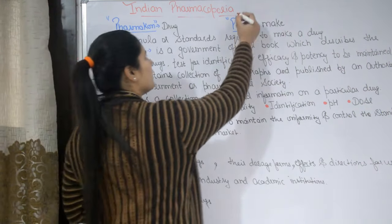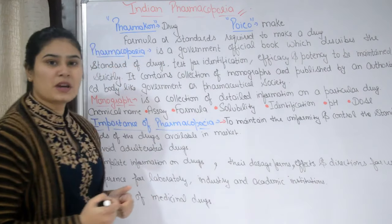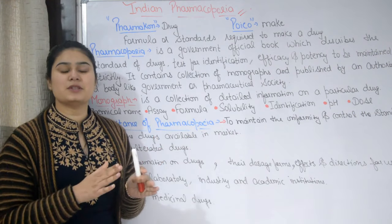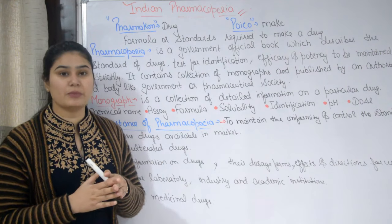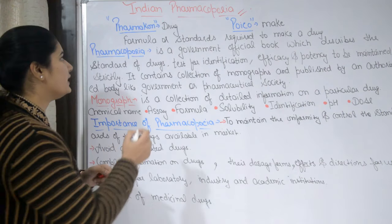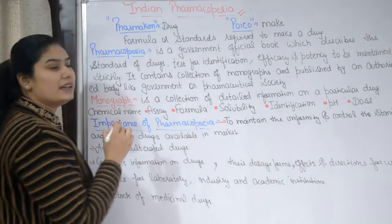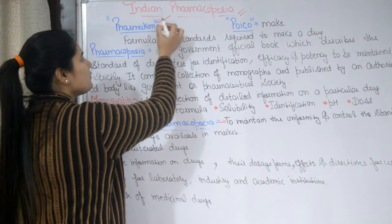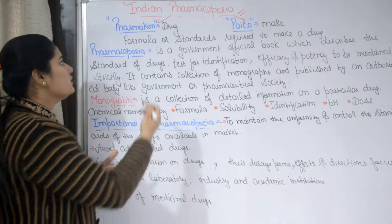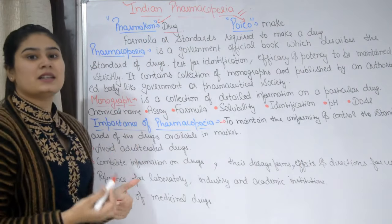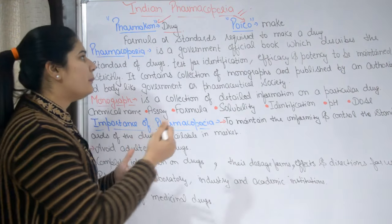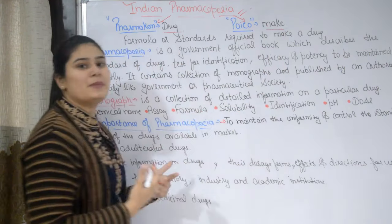Indian Pharmacopoeia is a pharmacology topic. Before we understand Indian Pharmacopoeia, we will simply understand what pharmacopoeia means. In Greek, pharmacopoeia is divided into two words: 'pharmacon' and 'pia'. Pharmacon means drug or pharmaceutical drug, which we normally call medicine. And 'pia' means make — so together it means drug making.